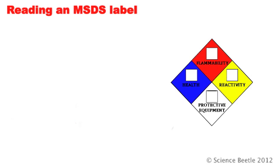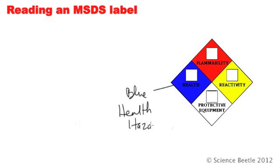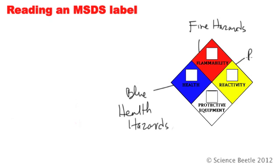When we look at the MSDS label, we've got four parts. The first part is what we call the blue part, and the blue part essentially deals with any health hazards. The red part, labeled here as flammability, deals with any fire hazards. The yellow part deals with reactivity. And the white part deals with any special hazards that you should be aware of.